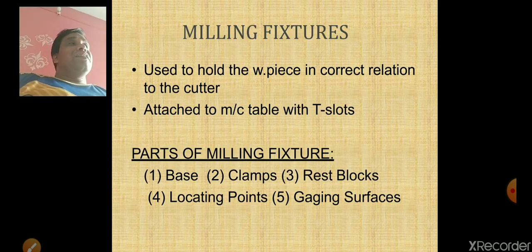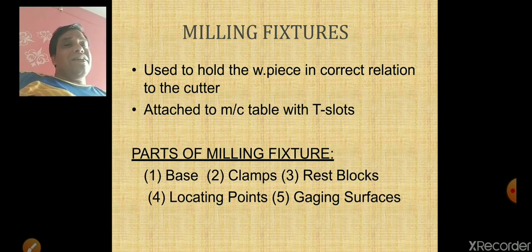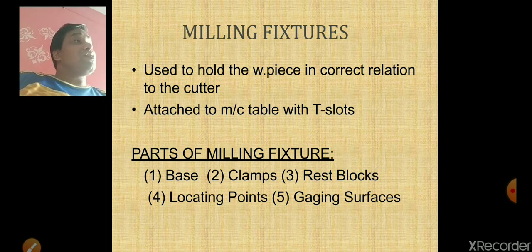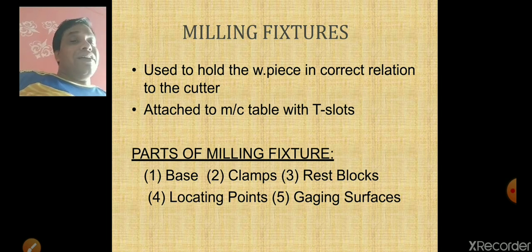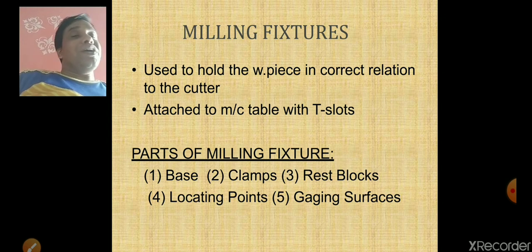Now we will see the milling fixture. It contains six different parts: first is the base; second is the clamp; third is the rest block — its function is to locate the cutter; locating pins are used to locate the workpiece inside the fixture; and gauging surfaces ensure the proper position of the fixture with respect to the cutter.